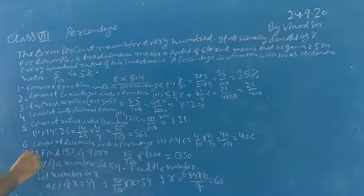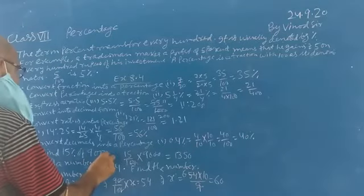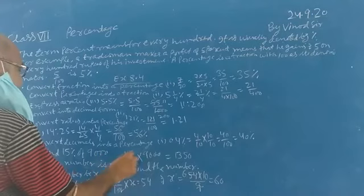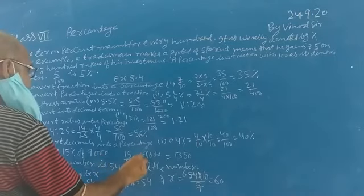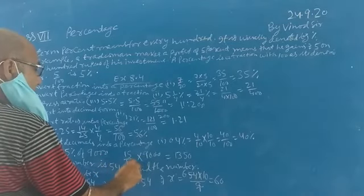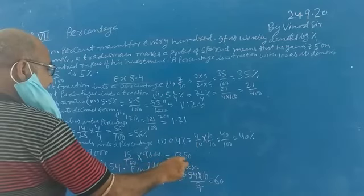Question 7: Find 15 percent of 9000. 15 percent means 15 by 100 into 9000, which equals 1350.